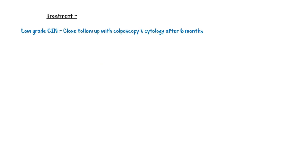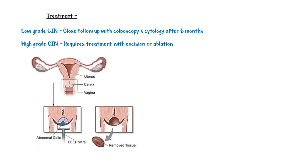Low-grade CIN regresses spontaneously in up to 60% of cases. Therefore, close follow-up with colposcopy and cytology is recommended for CIN 1. By contrast, high-grade CIN requires treatment with excision or ablation. This image shows a large loop excision of the transformational zone. For cervical cancer, surgery and radiotherapy are recommended depending on the stage of the cancer.